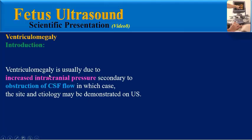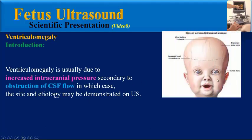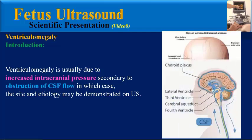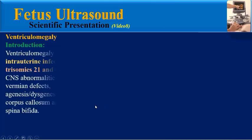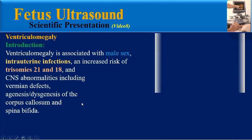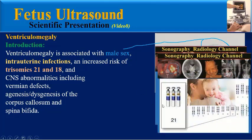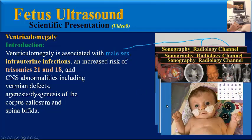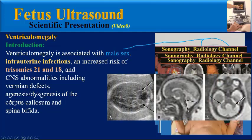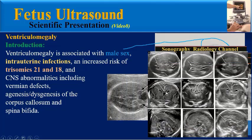Lateral ventricular enlargement represents the tip of the iceberg in fetal CNS imaging, as it is sensitive for detection of a wide variety of fetal CNS abnormalities. Ventriculomegaly is usually due to increased intracranial pressure secondary to obstruction of CSF. It is associated with male sex, intrauterine infection, increased risk of trisomy 21 and 18, vermian defects, and agenesis or dysgenesis of the corpus callosum and spina bifida.